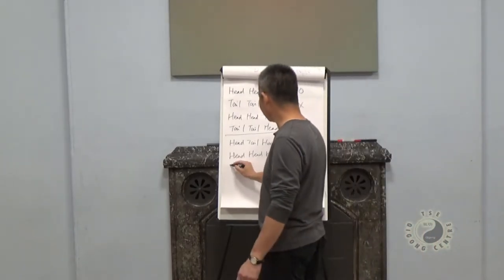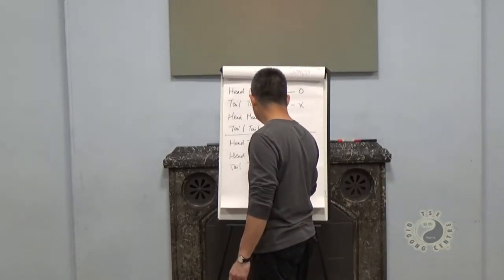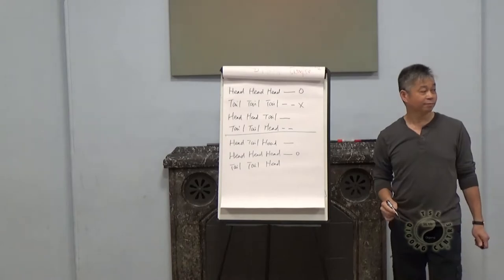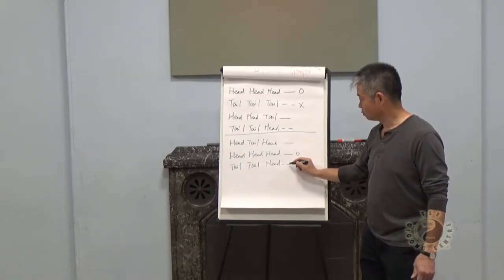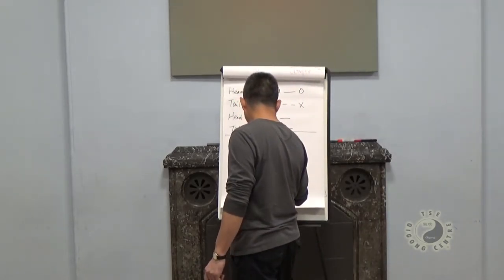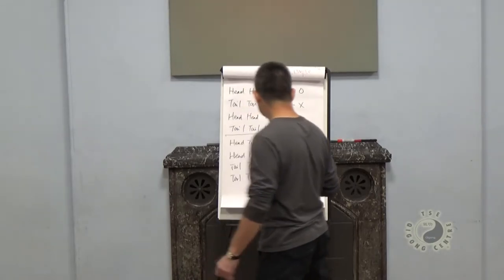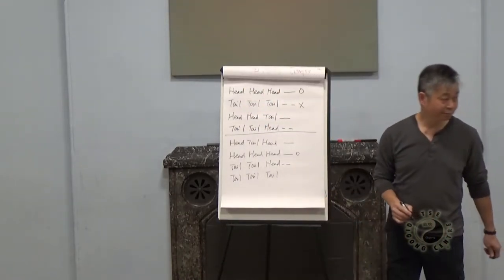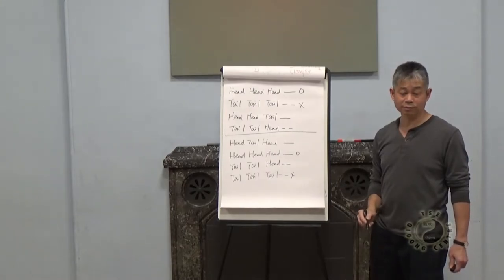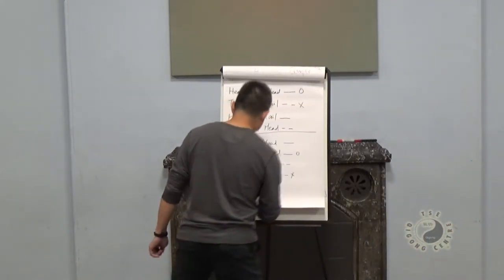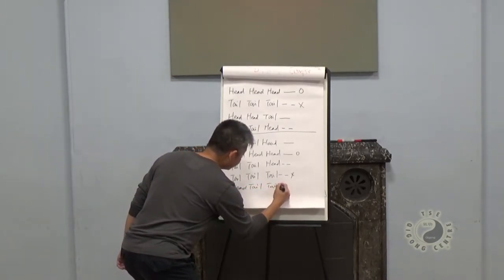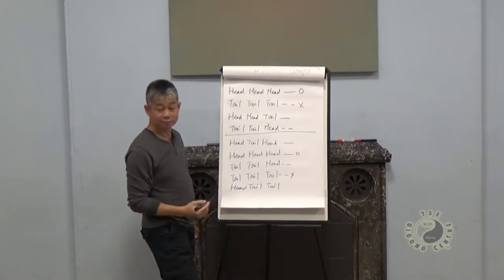And then Tail, Tail, Head. What's that? Tail, and then Tail, Tail, Tail, Tail. What's that? Yin. Change — we have a cross. Head, Tail, Tail, Tail, Tail. What's that? Yin.